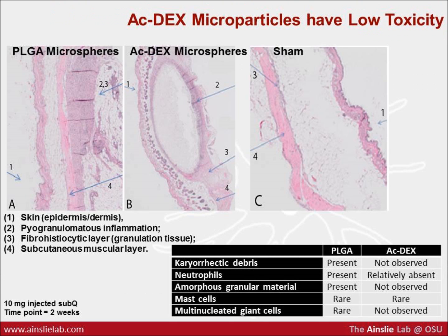We've used nanoparticles a lot, and we often deliver them subcutaneously, although they can be delivered through multiple routes. This histology is showing a subcutaneous injection of ac-dex microparticles. We took mice and injected about 10 milligrams of particles subcutaneously. After two weeks, we stained the tissue for H&E staining. What we saw was a marked decrease in neutrophils as well as mast cells, and the foreign body response seemed to be reduced slightly, because the multinuclear giant cells were also minimal with the ac-dex microspheres.